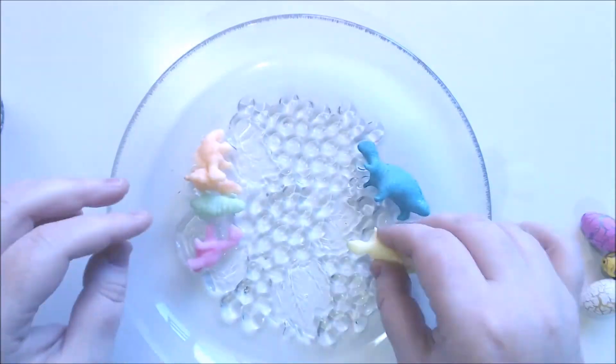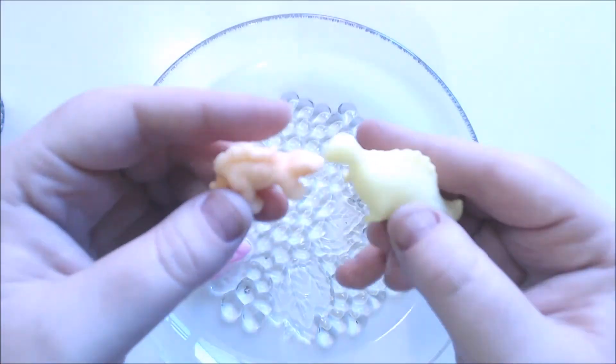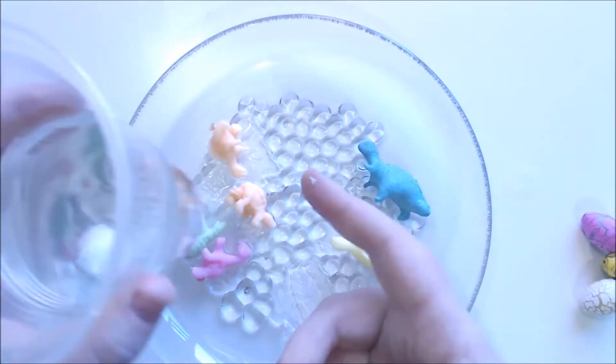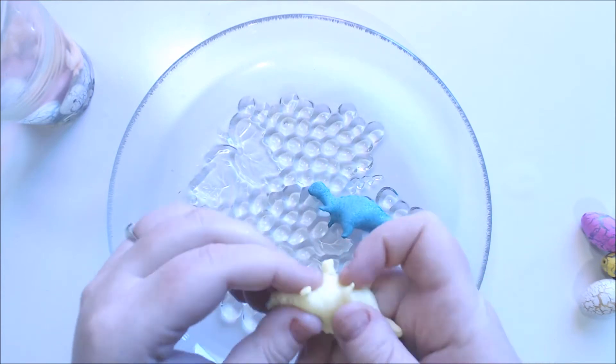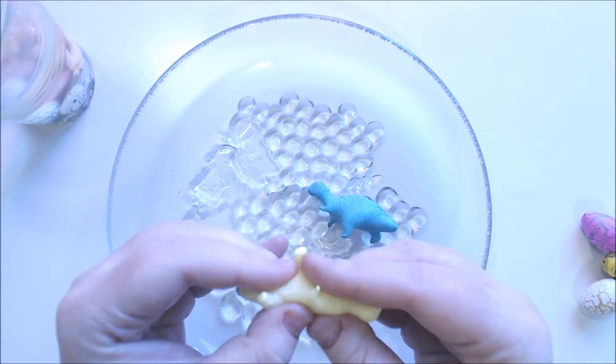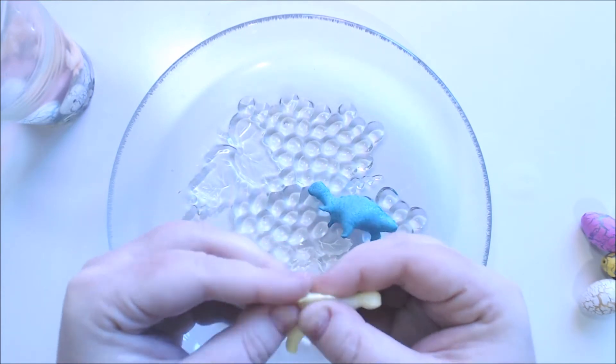They're kind of like a sponge, so they absorb lots and lots of water and then they become bigger and bigger. We'll pop those ones back in the water so they can get a bit larger. I'm just going to show you these ones a bit more close up because they're quite squishy squishy and I thought that might be nice.